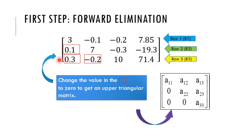We have to change the values in the red square boxes to become 0 so that we can get an upper triangular matrix.